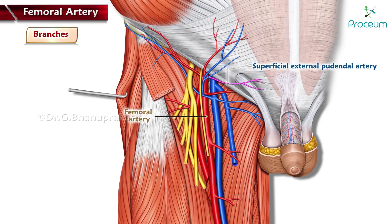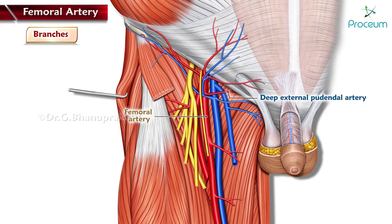The superficial external pudendal artery supplies the lower abdominal skin as well as the penile, scrotal, or labial skin. The deep external pudendal artery supplies the skin of the perineum as well as the skin of the scrotum or labium majus.